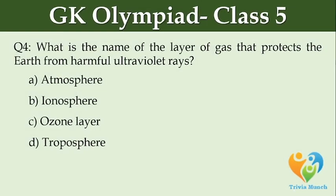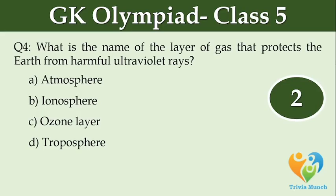What is the name of the layer of gas that protects the earth from harmful ultraviolet rays? Option A: Atmosphere. Option B: Ionosphere. Option C: Ozone layer. Option D: Troposphere.